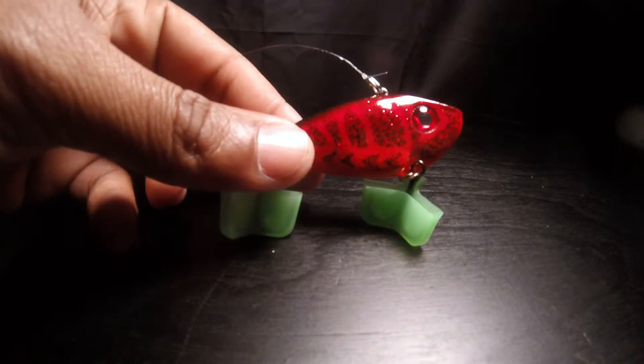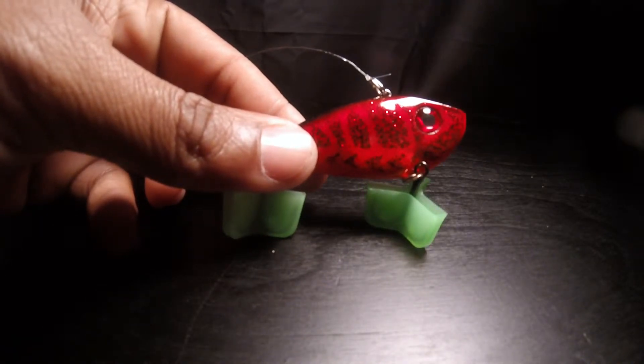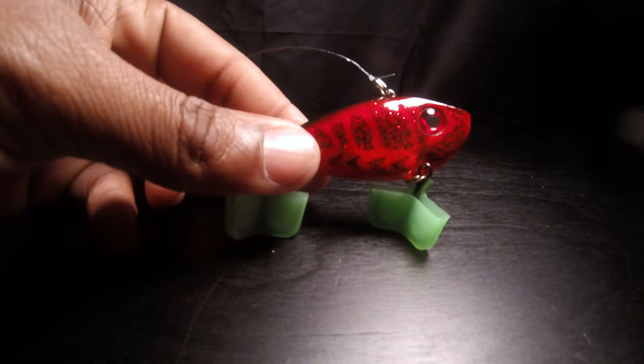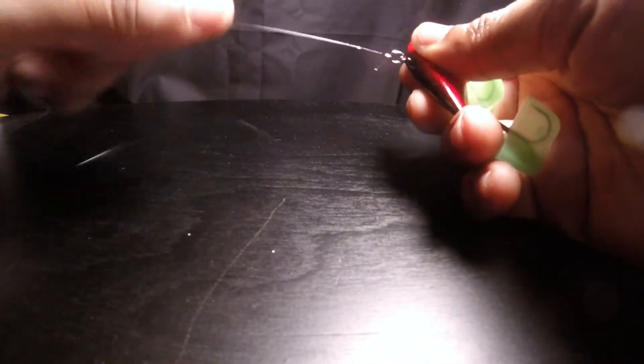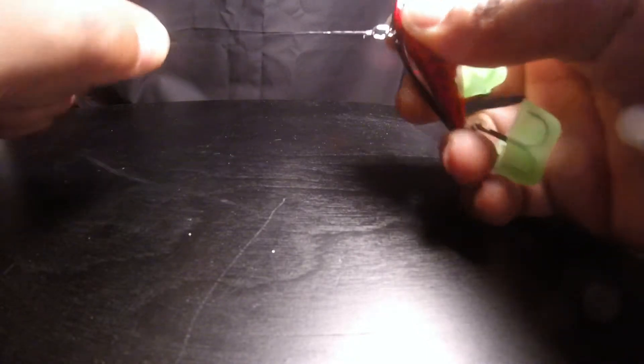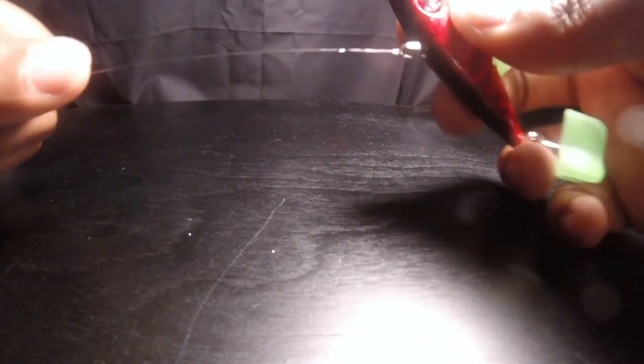This is for monofilament or braid—not braid—monofilament or fluorocarbon. This is what I like to use. It's a pretty strong knot and it has not failed. You can see that it's nice and snug, very tight.